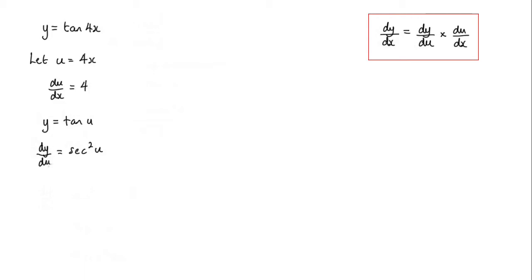So now we have dy by du and we have du by dx, then I can apply the chain rule to find dy by dx. So we have that dy by dx is equal to dy by du, which is sec squared u, times du by dx, which is 4. So we put 4 here.